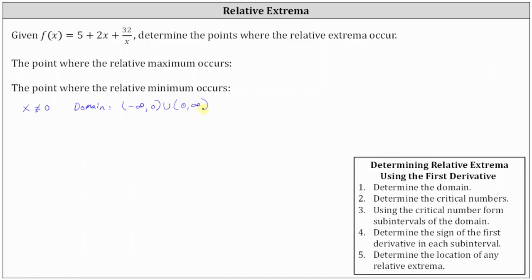The reason we find the domain before determining critical numbers is that critical numbers must be in the domain. This means if we determine x equals zero as a critical number, it would not actually be a critical number because it is not in the domain.